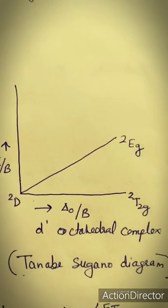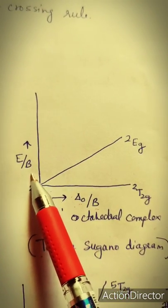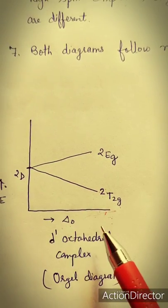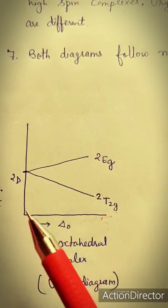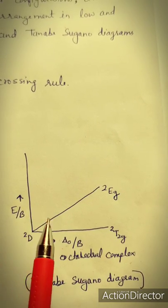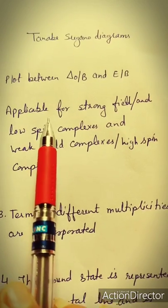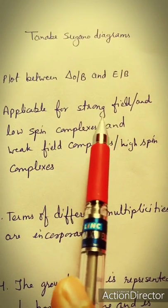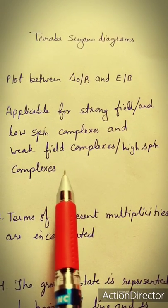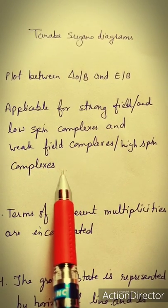By observing whether the plot is between δO and E, or δO/B and E/B, we can easily identify whether a diagram is an Orgel diagram or a Tanabe-Sugano diagram. Another difference is that Tanabe-Sugano diagrams are applicable for both strong field (low spin) and weak field (high spin) complexes, while Orgel diagrams are applicable only for weak field complexes.